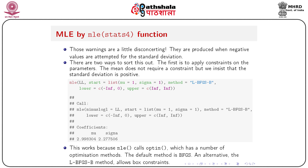Those warnings are produced when negative values are attempted for standard deviation. There are two ways to address this. The first is to apply constraints on the parameters — the mean does not require a constraint, but we insist that sigma is positive. Use method = 'L-BFGS-B', lower = c(-Inf, 0), upper = c(Inf, Inf). This eliminates the warning and gives estimates 2.99 and 2.77.